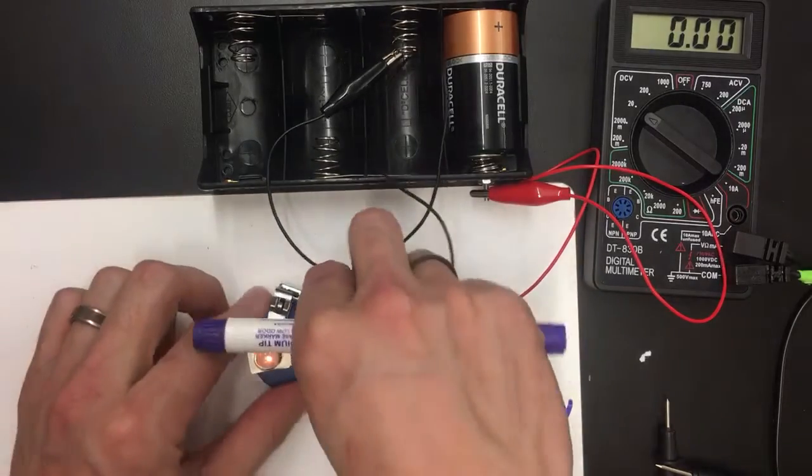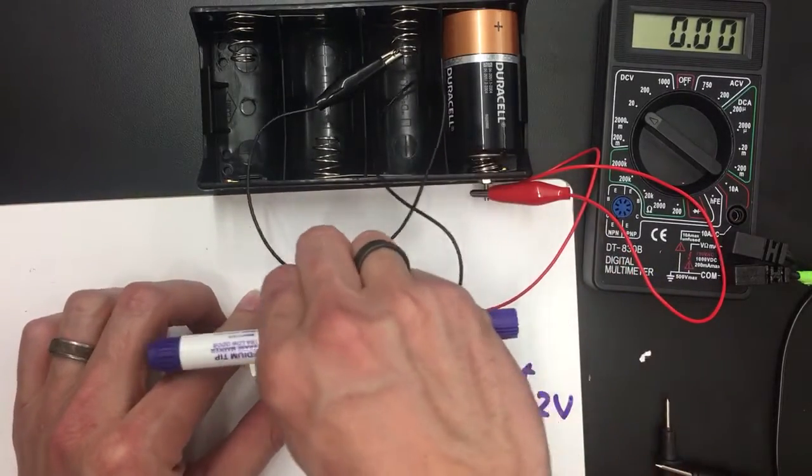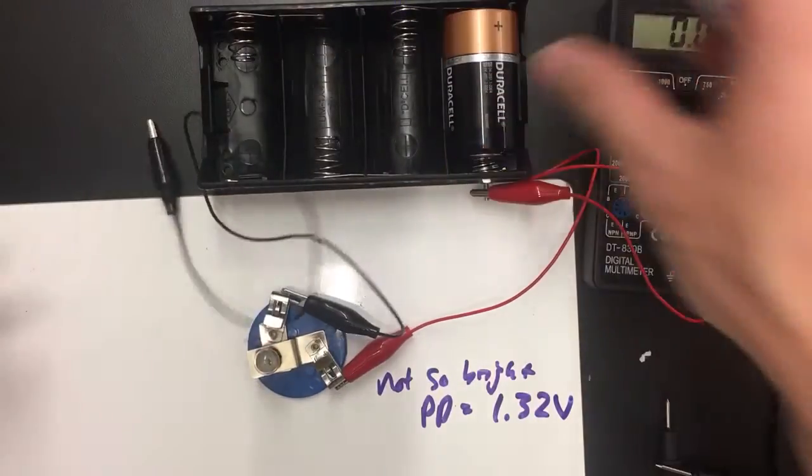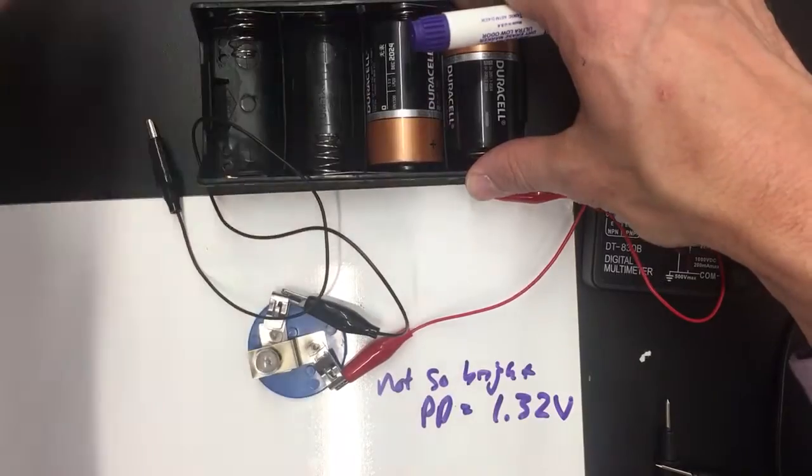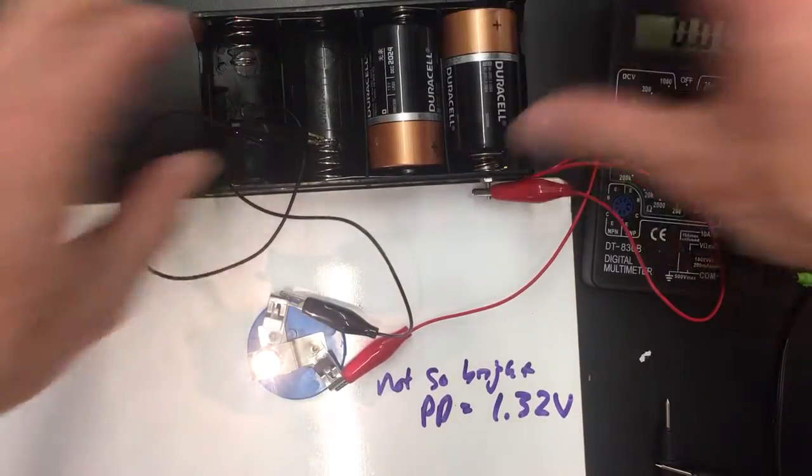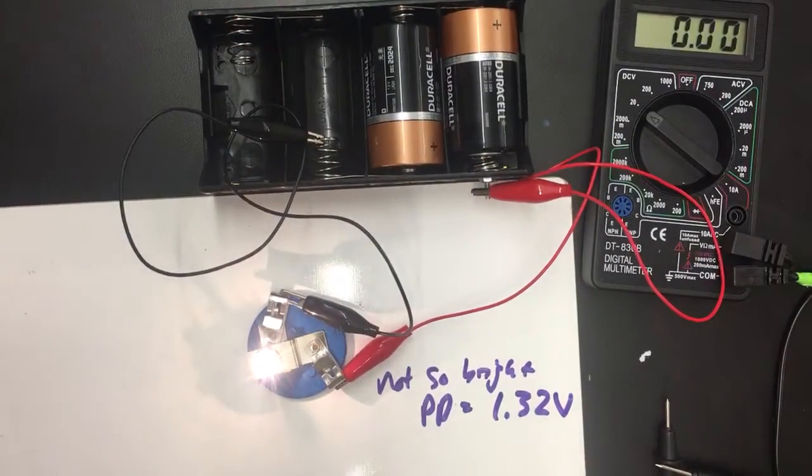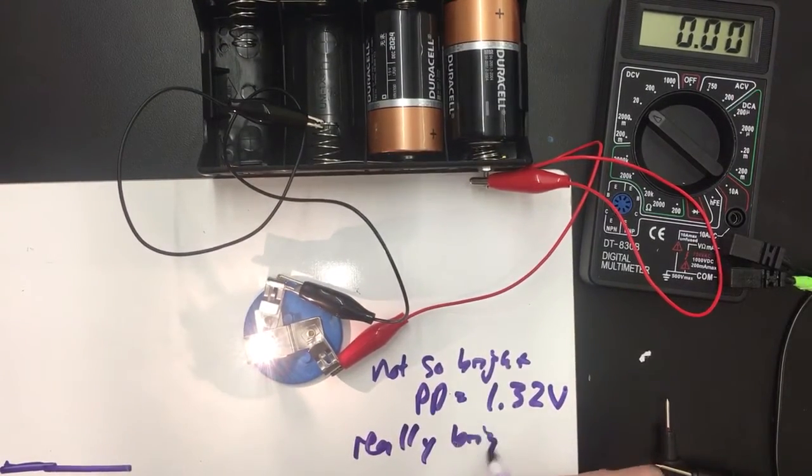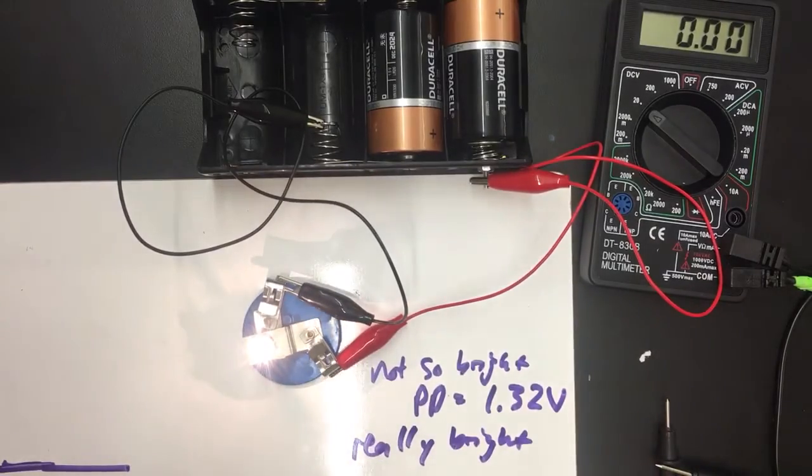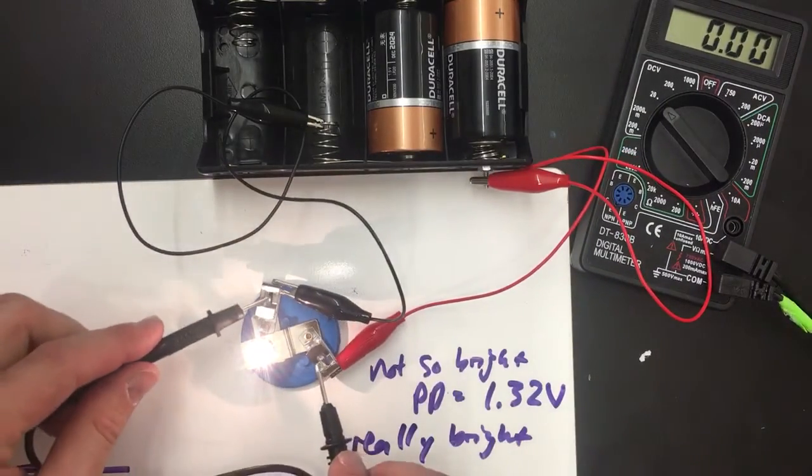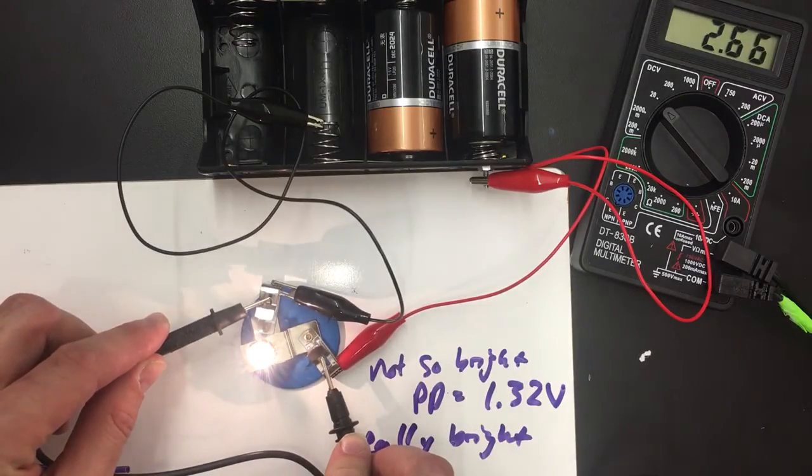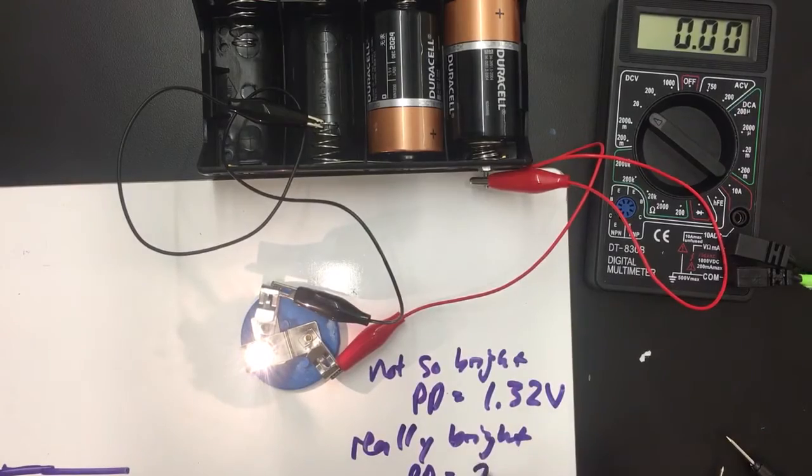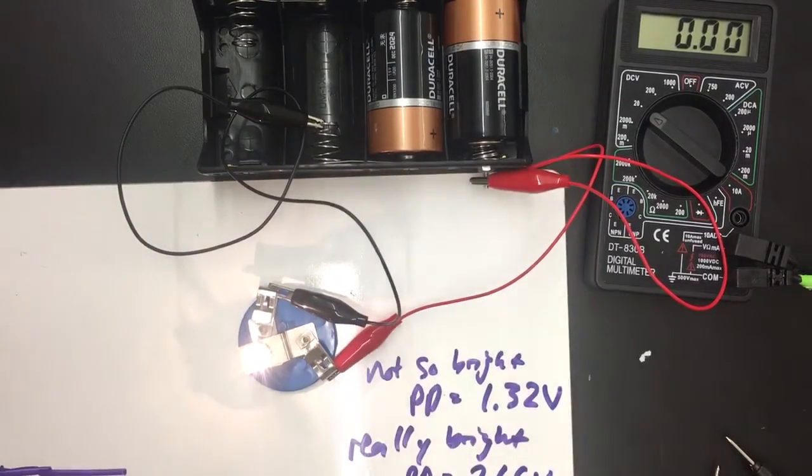Let me contrast that with, actually I'll leave this connected, and I'm just going to add a battery to this battery holder, a result that you've already seen at this point. If I connect both bulbs together, I can see that the bulb is really bright when the pressure difference across the bulb is 2.66. So the PD equals 2.66 volts.